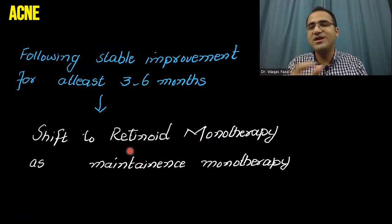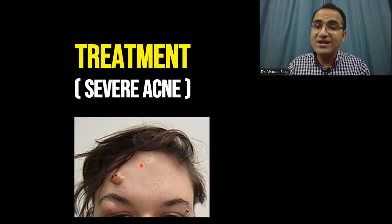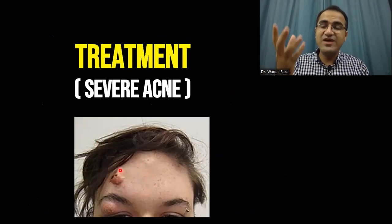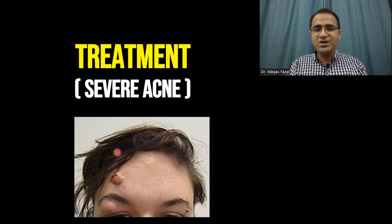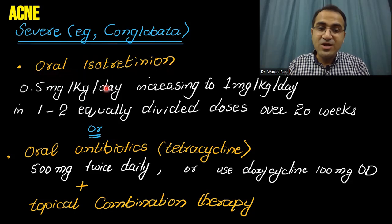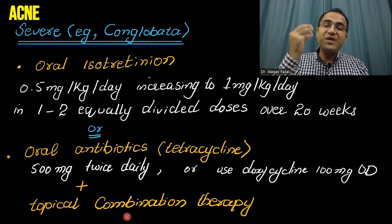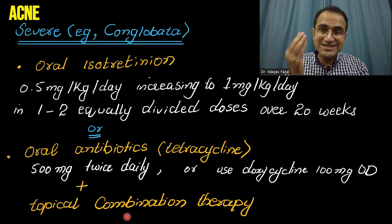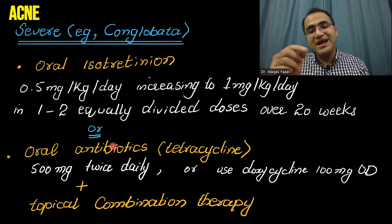Retinoid monotherapy for maintenance is a very good option. Coming to the treatment of severe acne — nodular acne where the size is greater than 5 millimeters, containing a lot of pus and resulting in scarring, also called conglobata acne. In that case, use a combination of oral isotretinoin with topical combination therapy, or oral antibiotic tetracycline 500 mg twice daily or doxycycline 100 mg once daily combined with topical therapy. Oral isotretinoin is basically a vitamin A derivative.